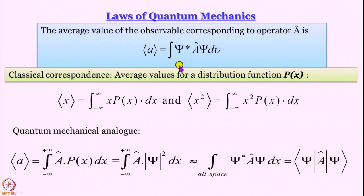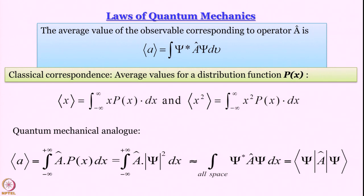That is exactly what we have written here. What is the average value of A? To find that, first you have to make A-hat operate on psi. Then in order to find the average, you multiply by psi-star and integrate over all space. That is how we get the average value of any quantity. We are going to work out at least one problem in the next module while revising, where the meaning of average value and most probable value will become much clearer.